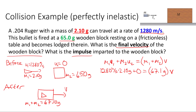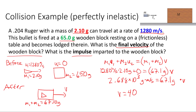1280 times 2.10 gives 2.688 × 10³ gram·meters per second equals 67.1 grams times V. Dividing both sides by 67.1, V equals 40.1 meters per second. Since it's positive, the block moves in the same direction as the bullet — to the right at 40.1 meters per second. That's for a perfectly inelastic collision.